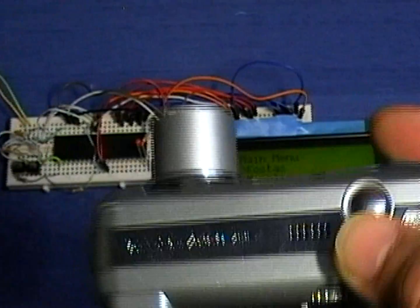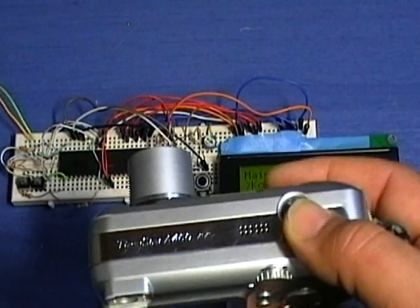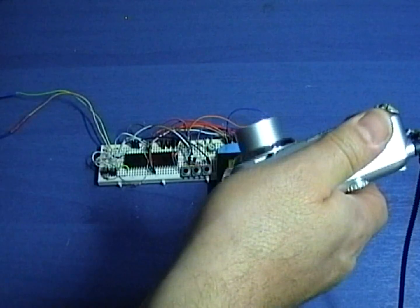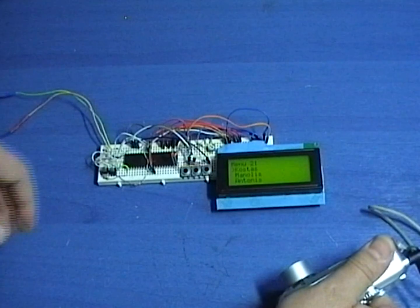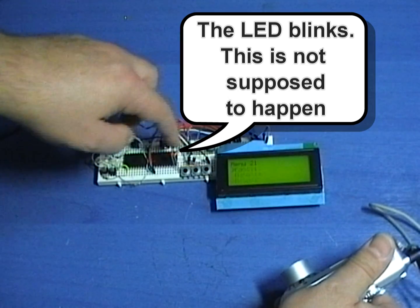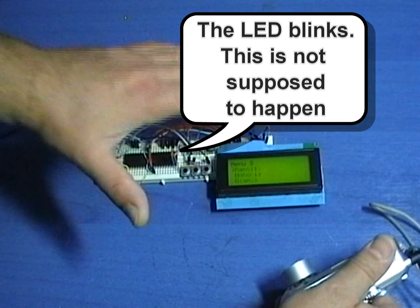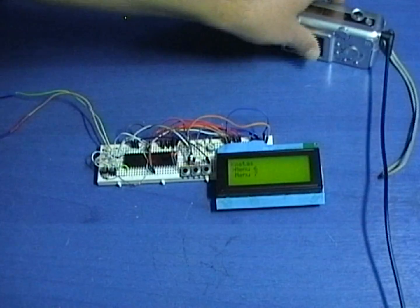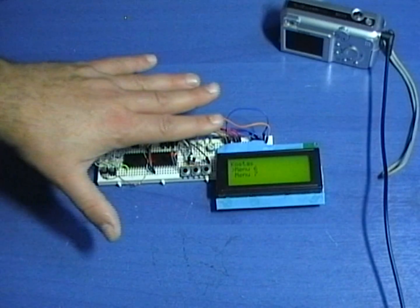And then, things turned really strange. I noticed that when I was holding the camera with my right hand and I was approaching the wires on the breadboard with my left hand the PIC went nuts. When I was not holding the camera the PIC worked just fine.